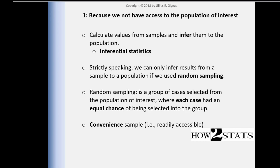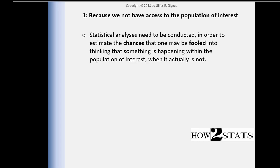Because we actually only have samples rather than populations, we need to evaluate or estimate the chances that we might fool ourselves into thinking that something is happening in the population when actually there's nothing going on in the population.